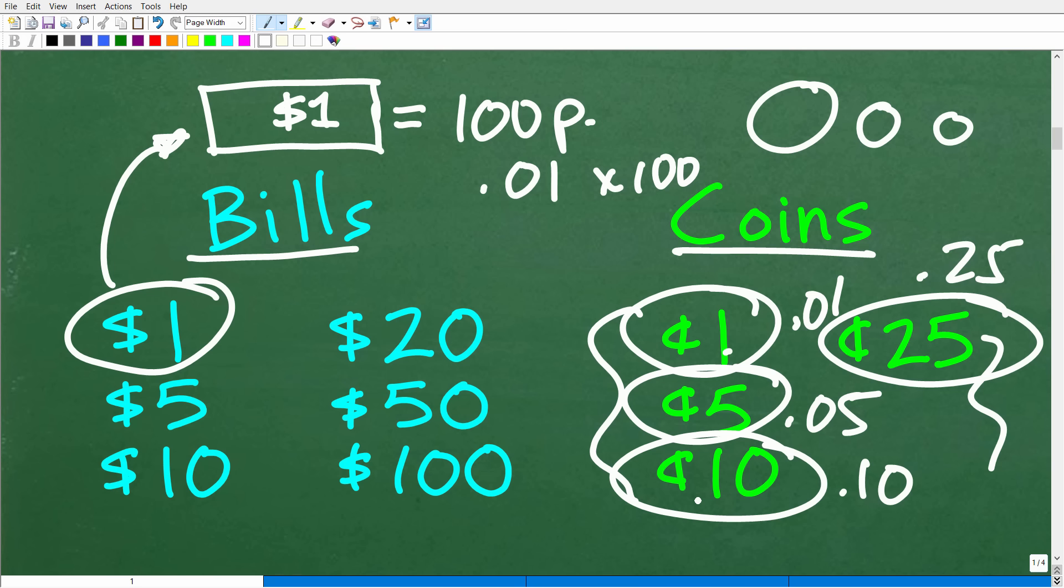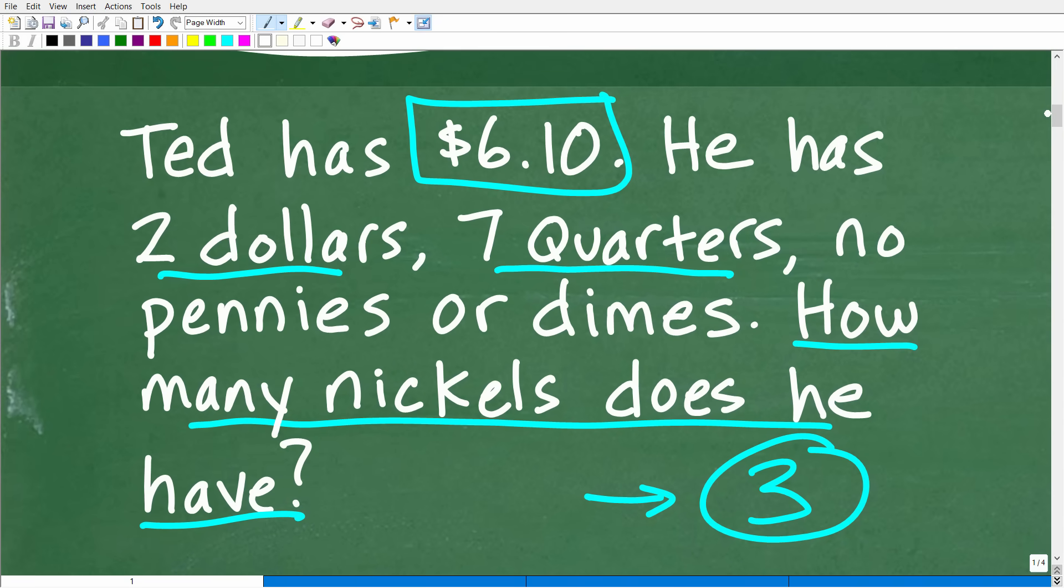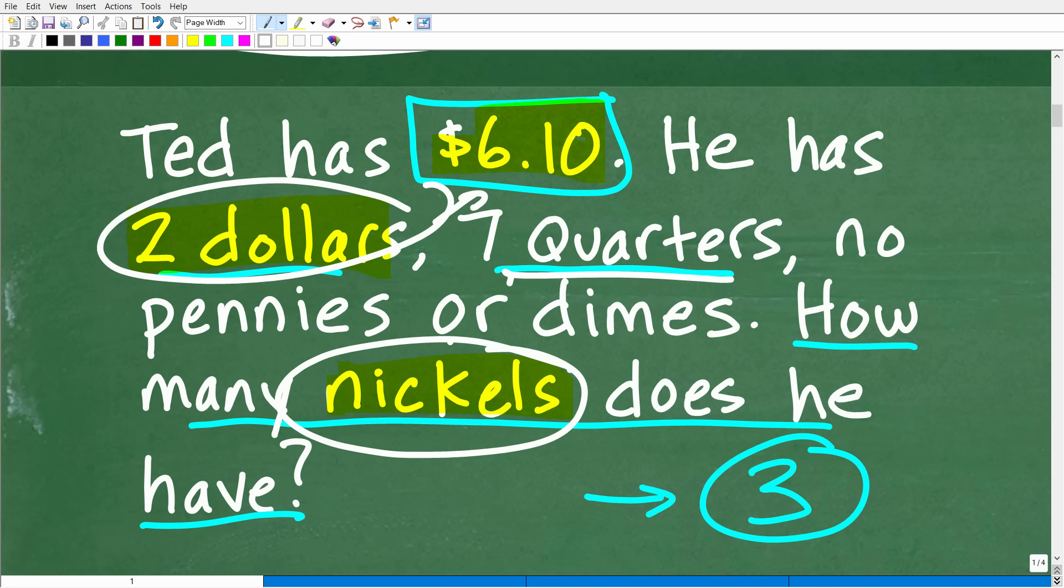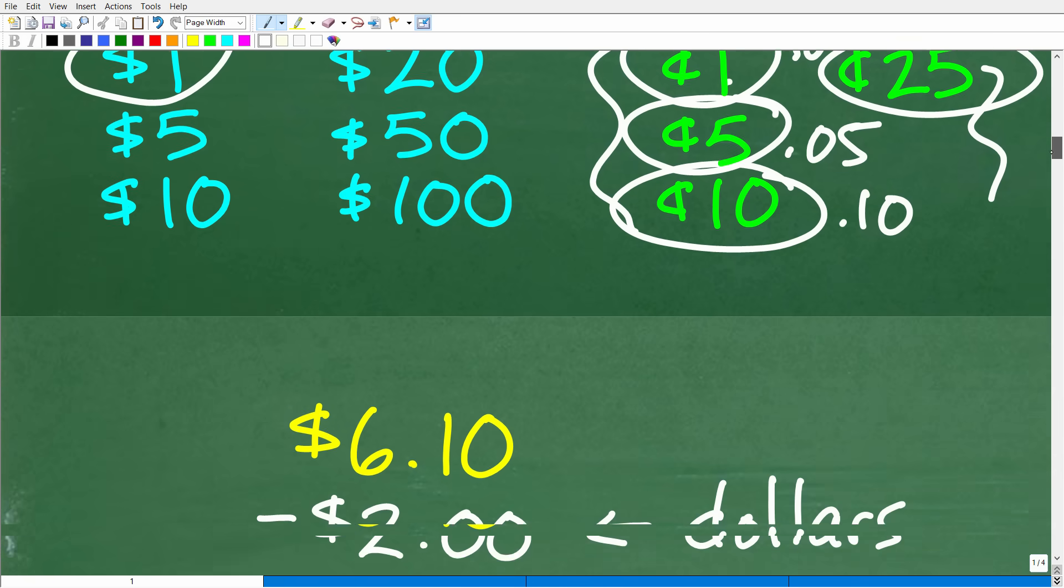Okay, so now that we have a quick sense of the value of bills and coins, then we can kind of take a look at this problem and say, all right, well, if Ted has $6.10 and he has $2, well, we can just remove those dollars from this amount. Because what we're looking for is nickels. So let's subtract away the bills away from $6.10. Once we've done that, then we can easily take away the value of those quarters. And then whatever is left has to be the total value of the nickels. And then we kind of figure it out from there. So let's go ahead and take this one step at a time.